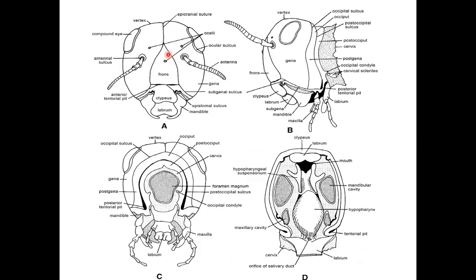In the frontal view of the head: there is the compound eye, a pair of antennae, the frons, the ocelli, the vertex, the clypeus, and the labrum. On the lateral side there is a pair of mandibles, the epistomal suture, the subgenal sulcus, antennae, vertex on the dorsal side, compound eye, simple eye, and the gena.